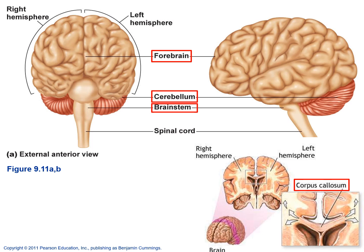The forebrain is the largest part of the brain. It's divided into two halves — the right and the left hemisphere. The two hemispheres communicate with each other through the corpus callosum, which is a bundle of myelinated axons that take messages back and forth between the two. The word corpus callosum: corpus means body, and callosum means thick — just a description of what it looked like.